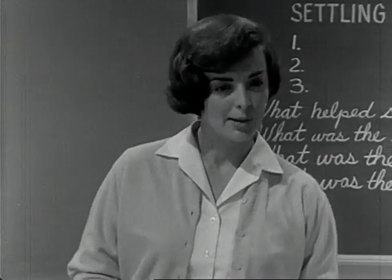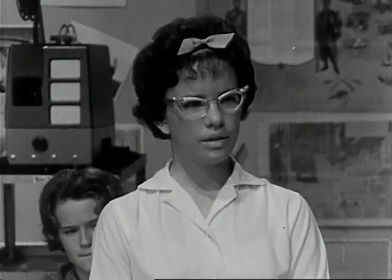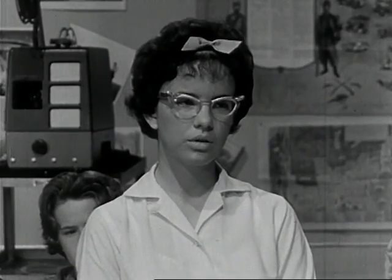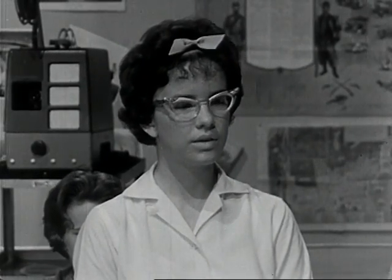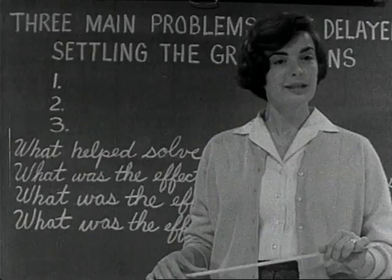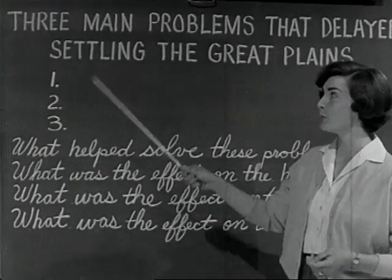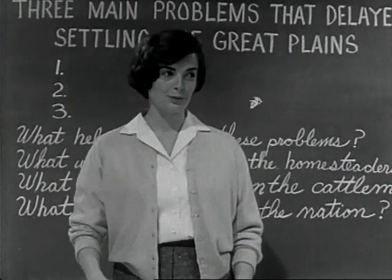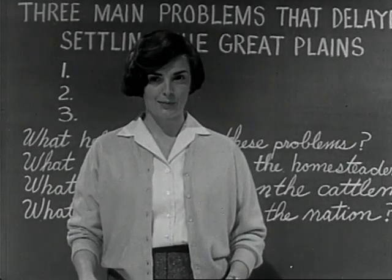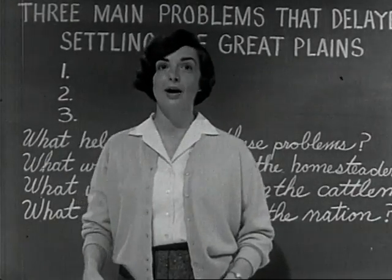Now, Kathy, do you recall the problem about the Plains area that we discussed yesterday? Well, there was constant fighting between ranchers and farmers over the use of land, so neither of them could become really prosperous. And we decided that this situation kept many people away who might otherwise have come and helped to settle the Great Plains. Very good summary, Kathy. Now, in this film, we're going to learn about some other problems that faced these people and what they finally did about them. Afterwards, I want you to be able to identify and discuss the problems and to describe how the eventual solution of these problems affected our country's history. All right, let's have the film.